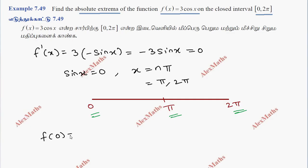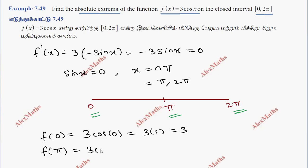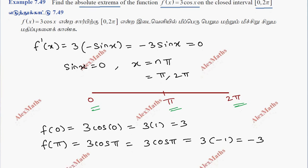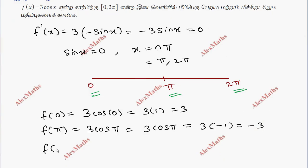Now we evaluate f at each point. f(0) = 3cos(0) = 3 × 1 = 3. f(π) = 3cos(π) = 3 × (−1) = −3. f(2π) = 3cos(2π) = 3 × 1 = 3.